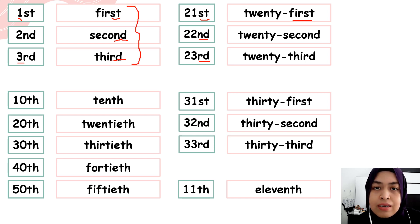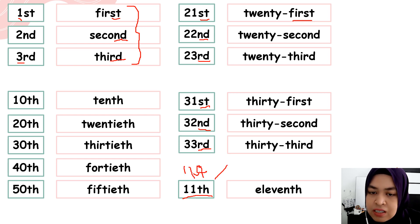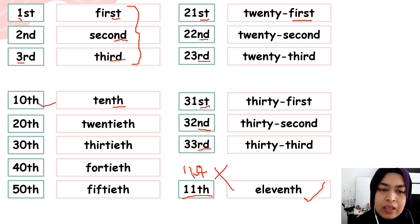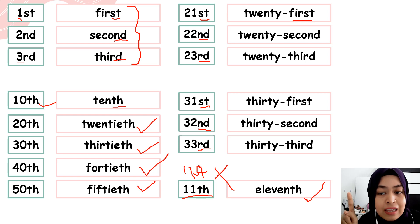As you can see here, thirty-first, thirty-second, thirty-third. But for eleventh, we do not say eleventh-st — that is wrong. The correct answer is eleventh. So for tenth, we put TH: tenth, twentieth, thirtieth, fortieth, fiftieth. That's how you say it.